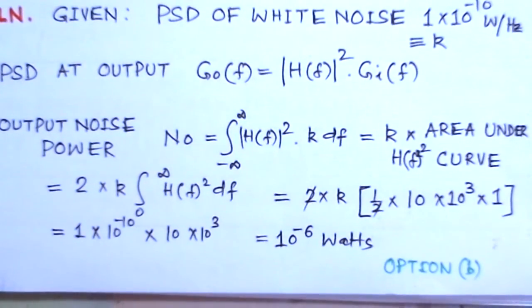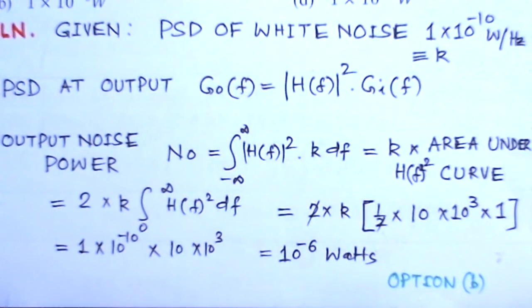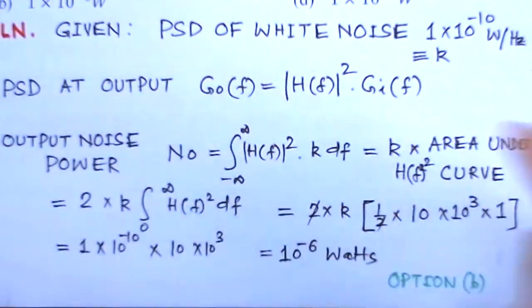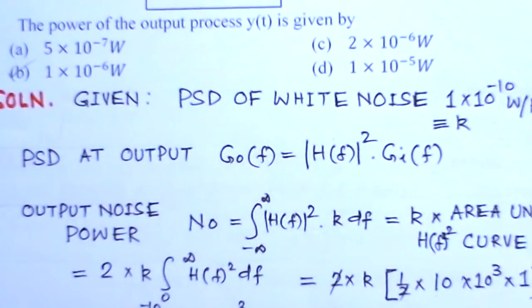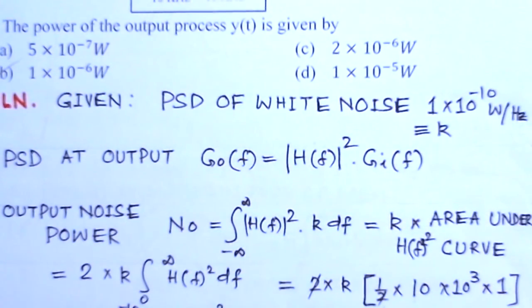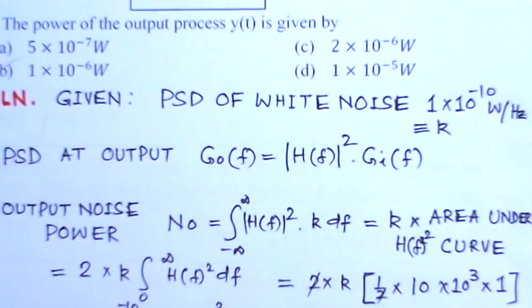So 1×10^-6 watts corresponds to option B. You can see this is option B here. This solution corresponds to option B.